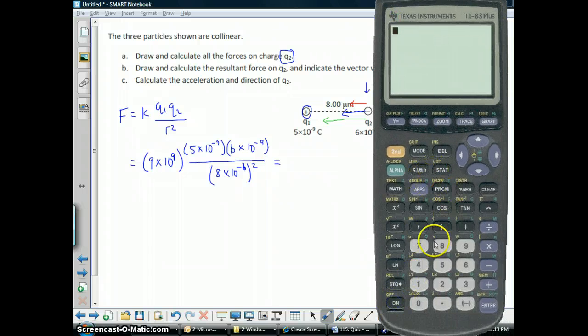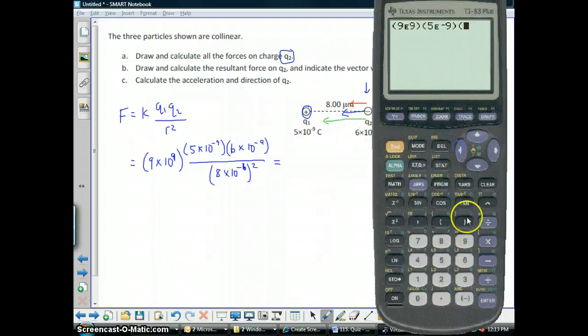So, after you do all those, the calculation looks something like this. 9 E 9, that's the same thing as times 10 to the 9th. 5 E negative 9. 6 E. Now, technically, the 6th is negative, since it's a negative. So, I'll go ahead and put that also. To the negative 9. That's all divided by 8 E negative 6 squared. So, that's the number we get.